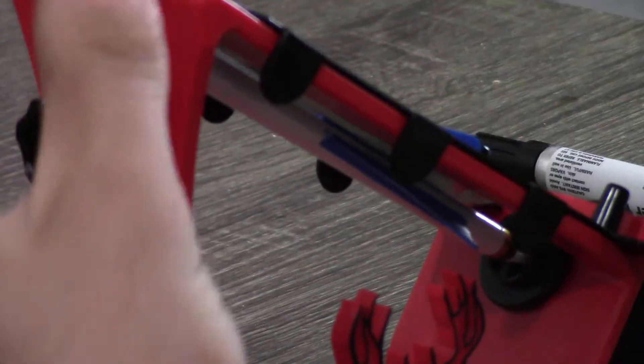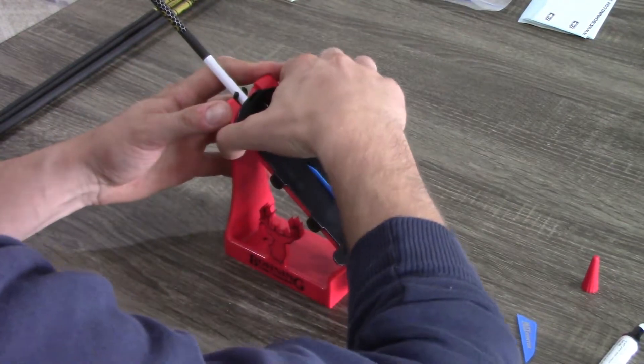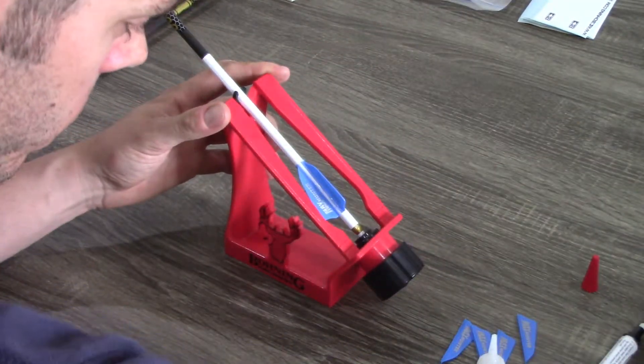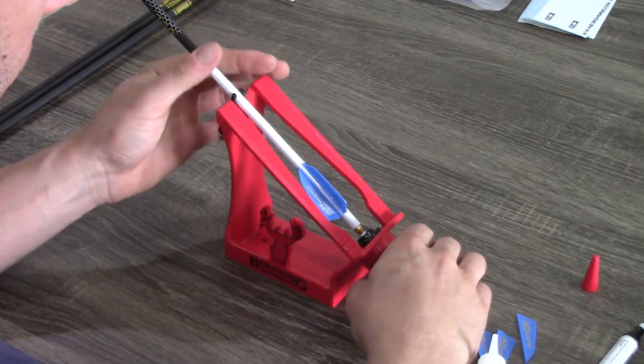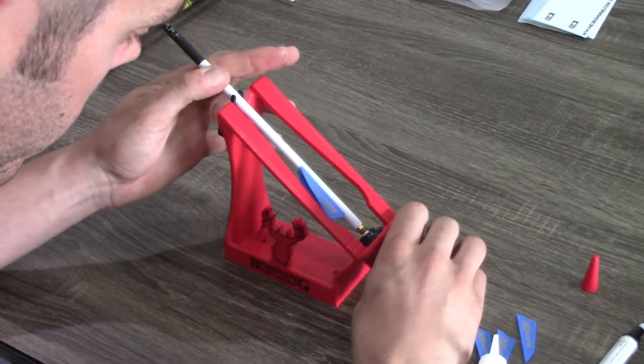And then again, I can pull the clamp off and rotate the jig to the next click. And now I can do the third and the fourth vein.